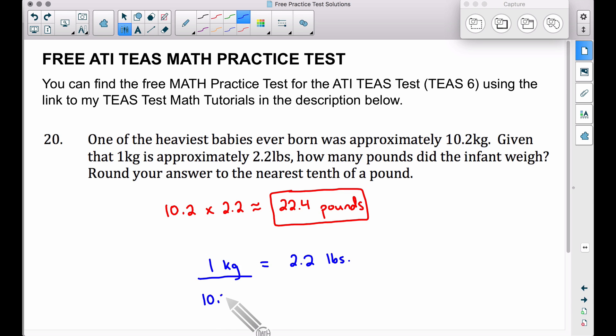I'm going to put that 10.2 kilograms over here as well. So I have kilograms over kilograms equals pounds over pounds. But I'm putting x pounds down here. If 1 kilogram equals 2.2 pounds, 10.2 kilograms is equal to x pounds.